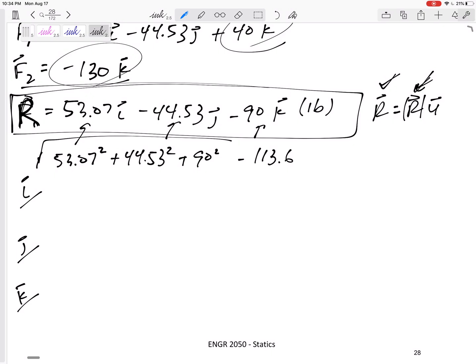But finding the coordinate direction angles, R equals Ru. This would be 53.07 on left hand side for i equals 113.6 cosine alpha.